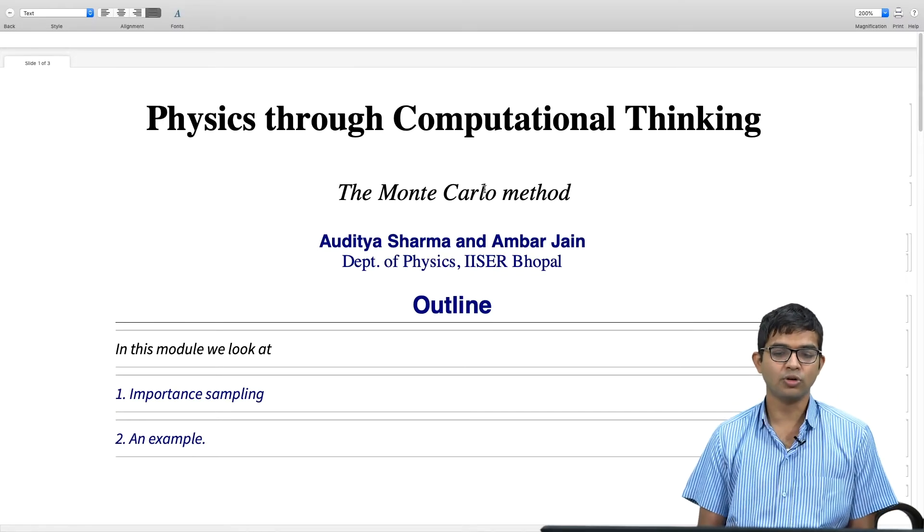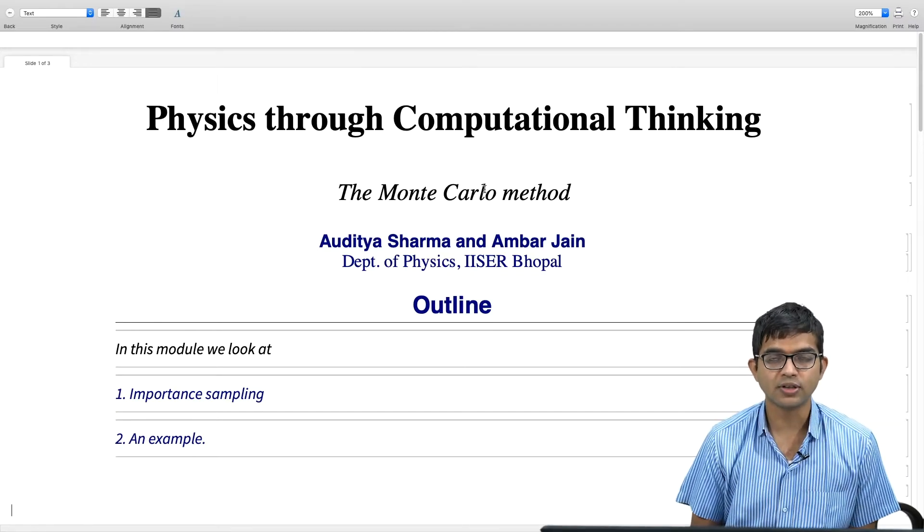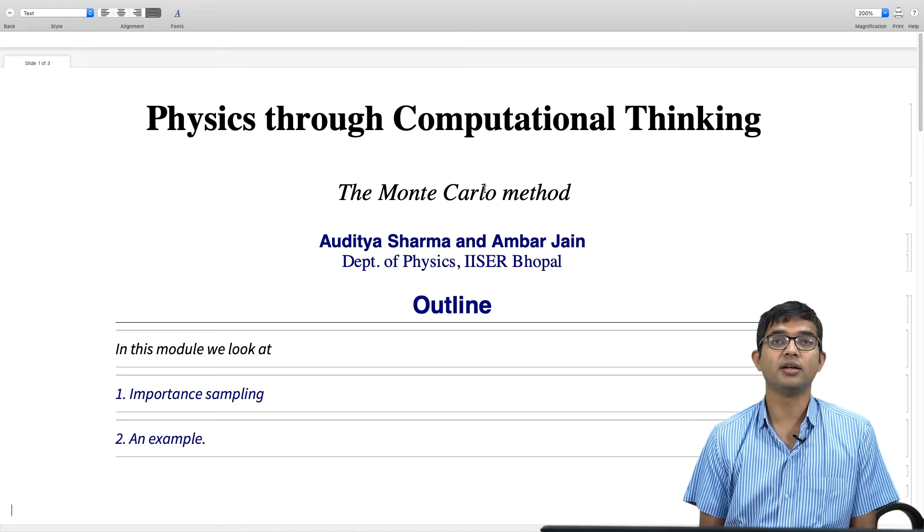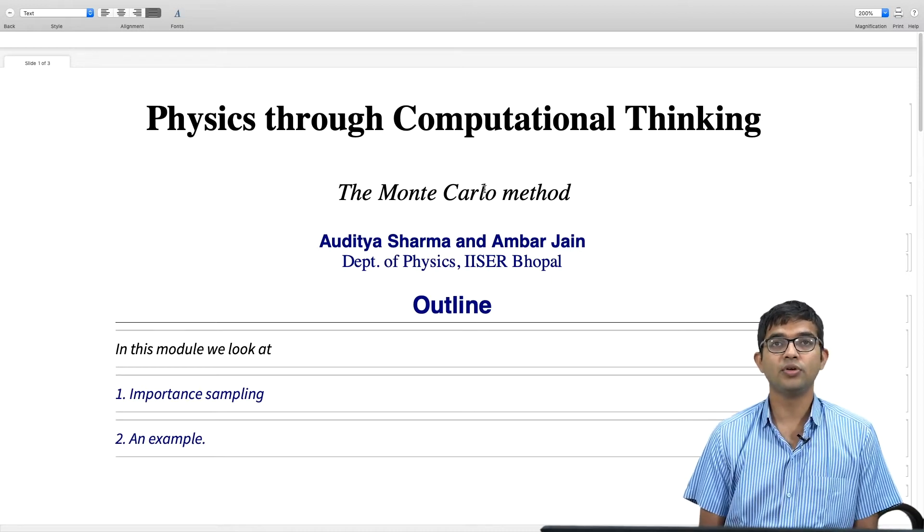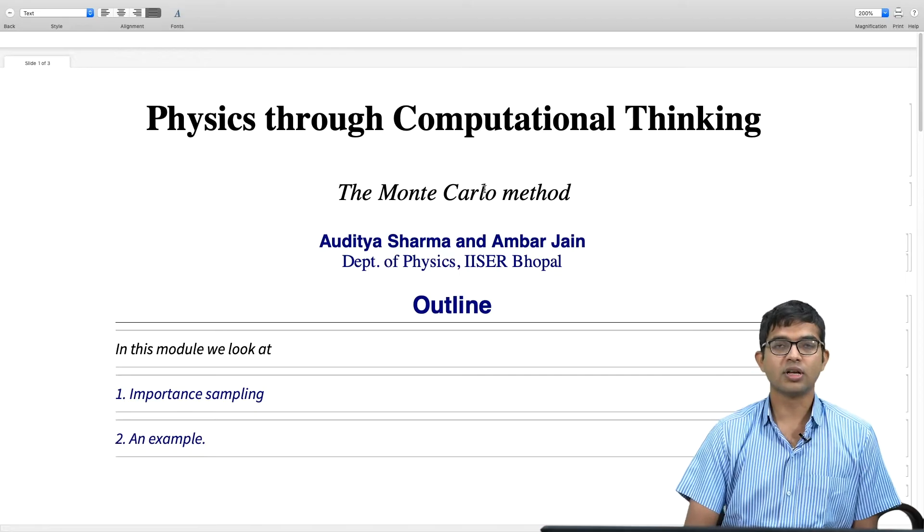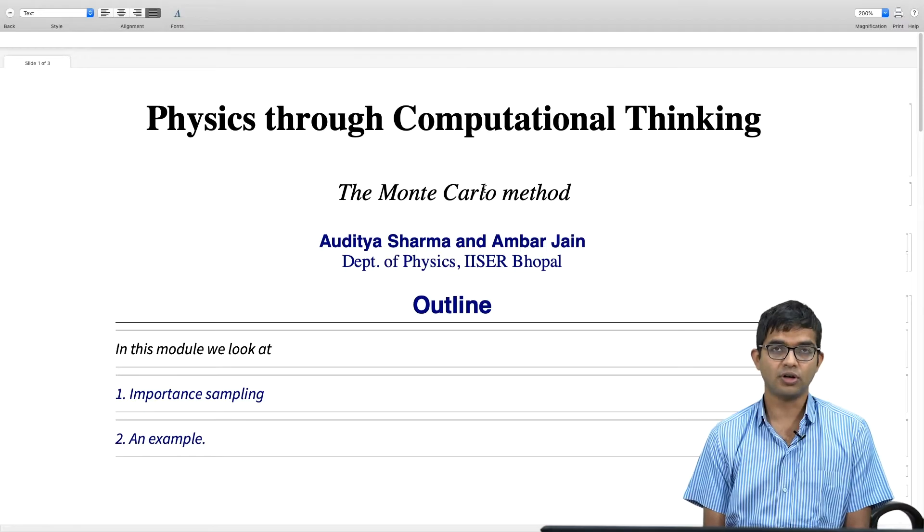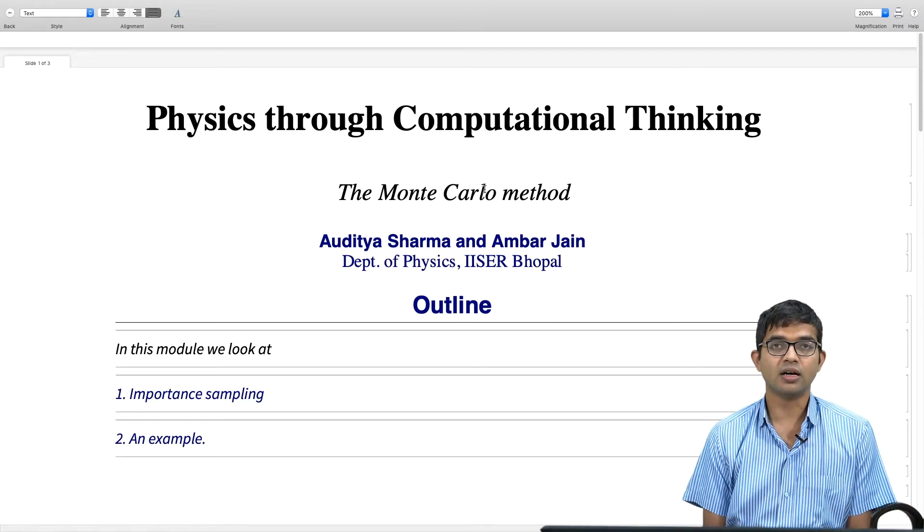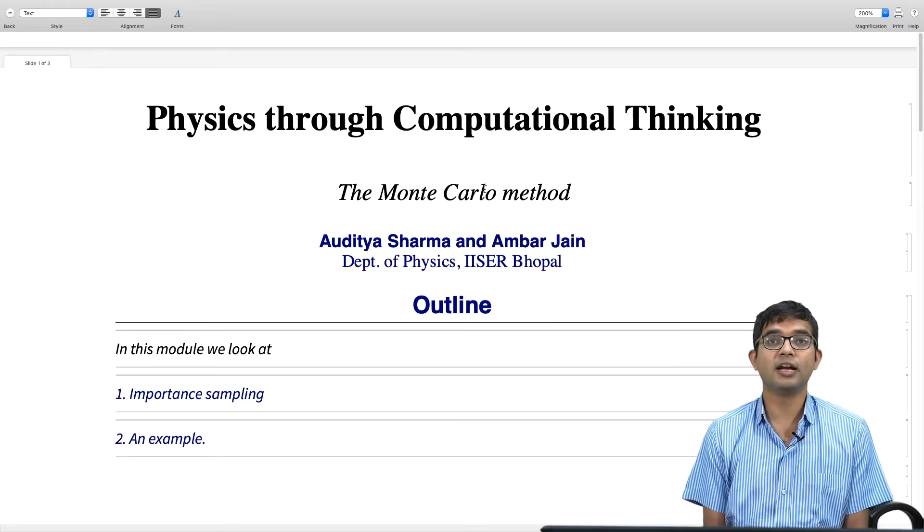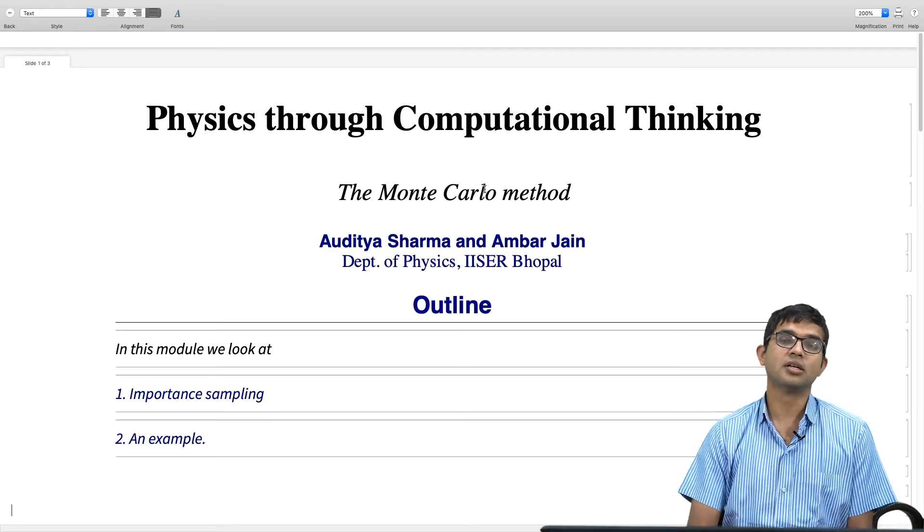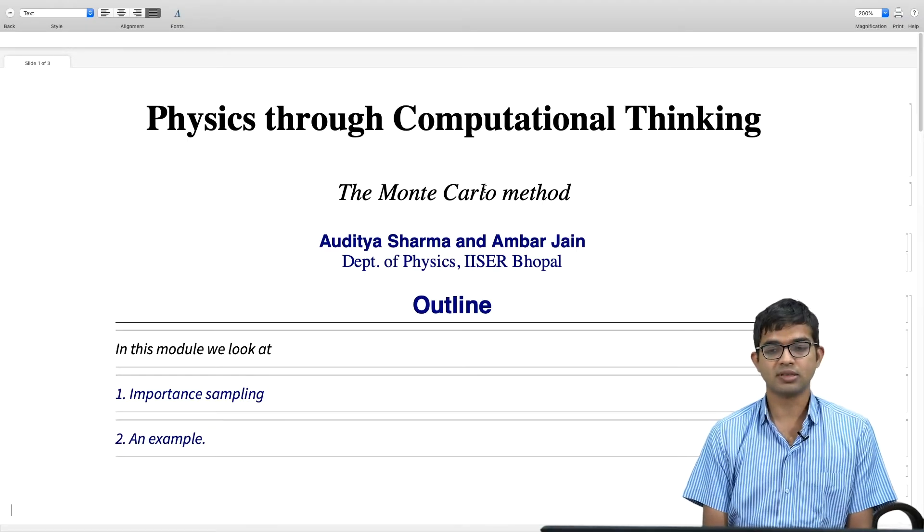Hey guys, so in the previous module we looked at how using the Monte Carlo method you can estimate definite integrals using the uniform sampling approach. It turns out that you can do something more sophisticated by simple modification and potentially get better convergence. This is the idea of importance sampling.